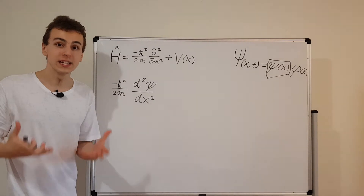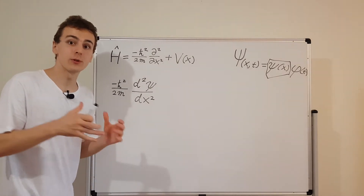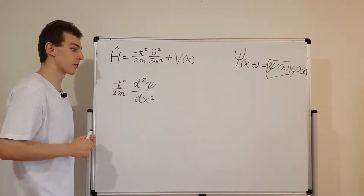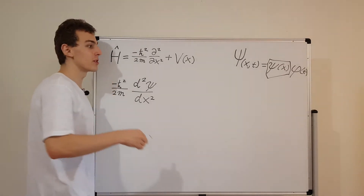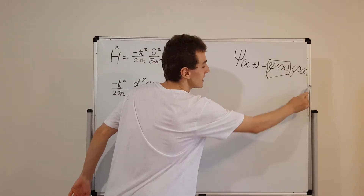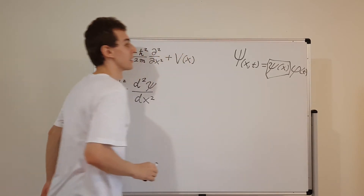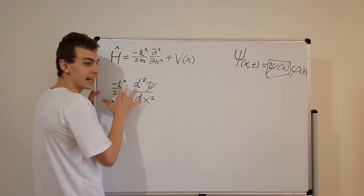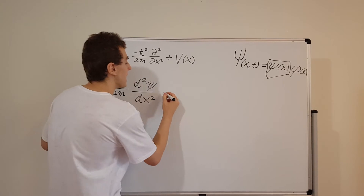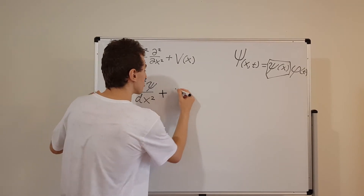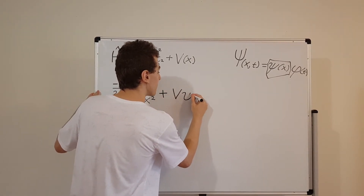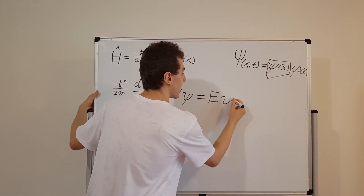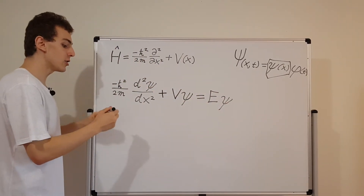So this is actually an ODE — an ordinary differential equation. We talked about solving this ODE, and we also solved another ODE related to the phi of t term, which gave us an exponential. So this is the kinetic energy term. We also need a potential term, that's going to be V times psi. And this is all equal to E times psi, where E is the allowed energy.